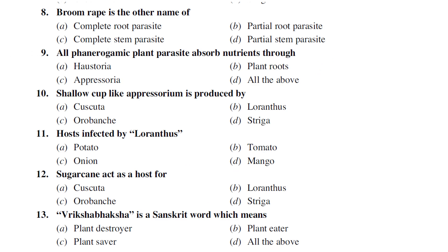Broomrape is the other name of Orobanche (Warabanki), which is a complete root parasite. They may ask interconnected questions, but if the question mentions broomrape, the answer is directly or indirectly connected to complete root parasite. Based on the options given, you must answer accordingly.